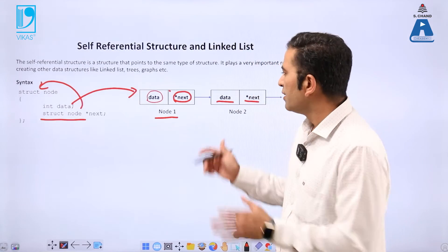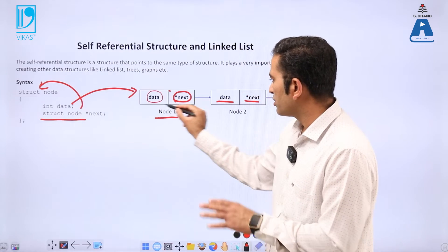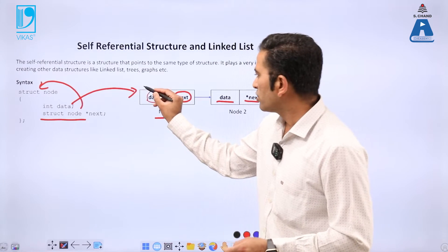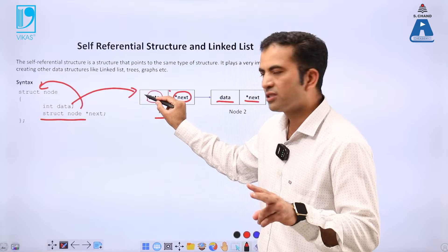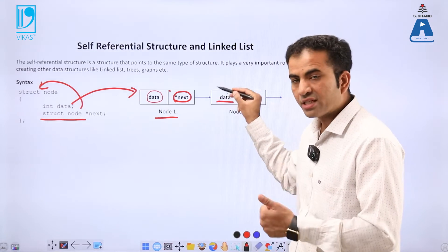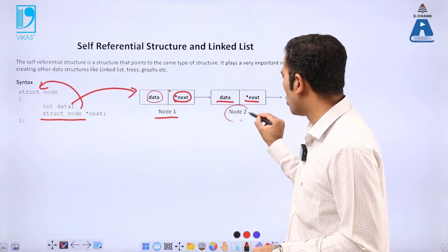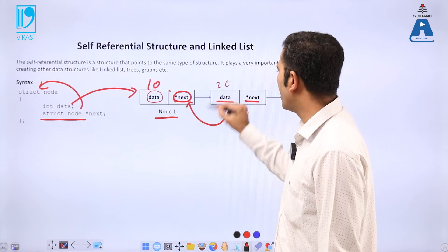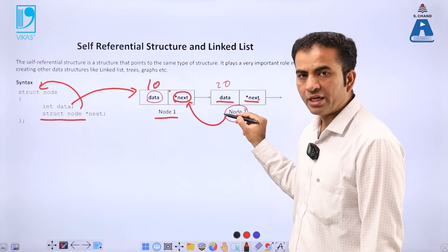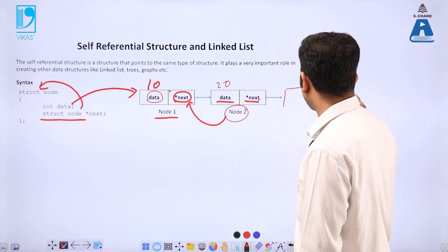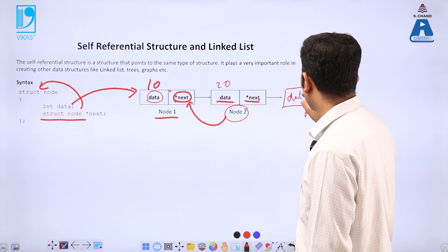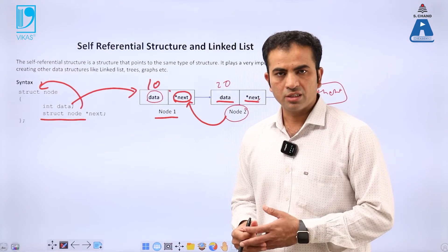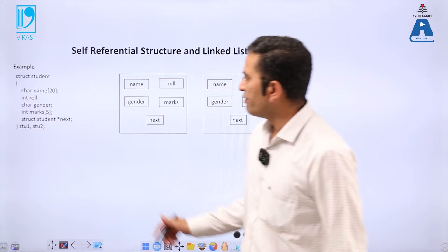Referring to itself means: consider a block — this block consists of data and an address (star next, which is a pointer type). A pointer always saves an address. So this particular node saves two values: data and the address of the next node. That address is assigned to the next field. Then a new node is created — for example, this is 10, this is 20 — and the next variable saves the address of another node. This process continues until the stopping condition is reached.